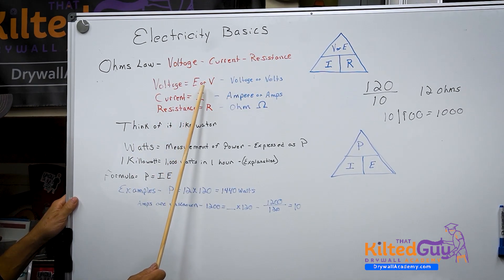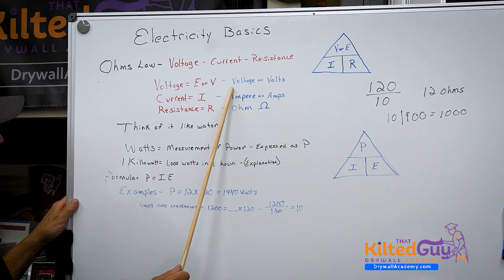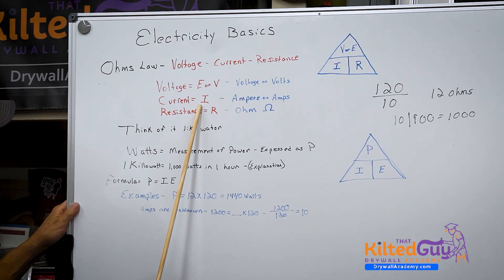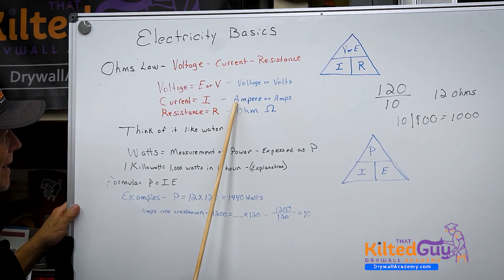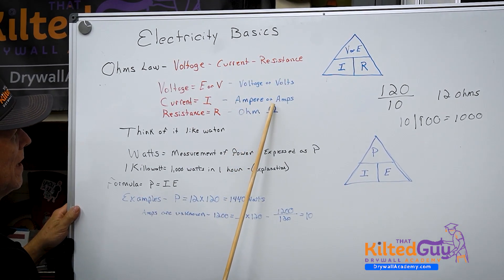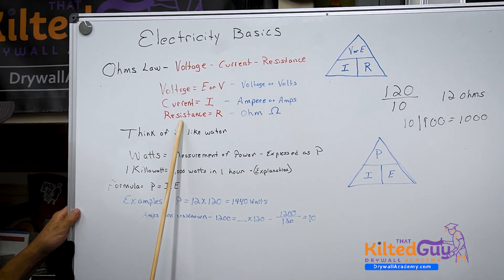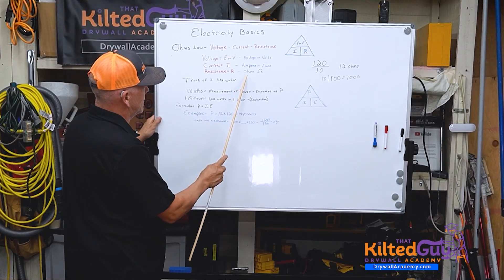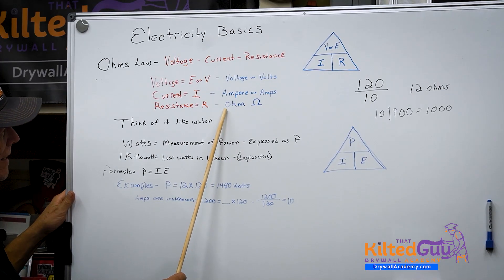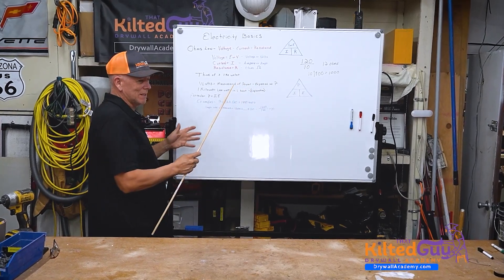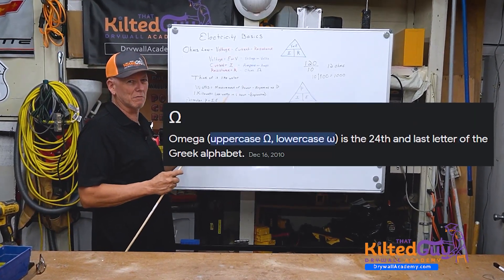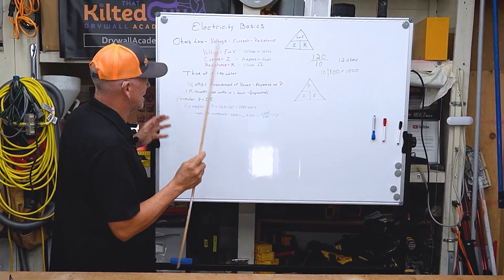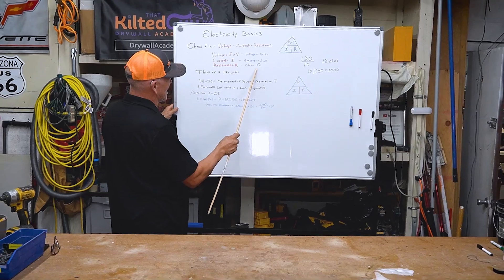That is expressed in this little triangle here. First, voltage is represented by the letter E or V. Current is represented by the letter I and is expressed or written as ampere or amps, most commonly amps. Resistance is represented by the letter R and it is expressed or written as ohm and uses this symbol, which if I remember right I think it's the Greek omega symbol.